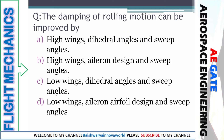Next question: the damping of a rolling motion can be improved by — high wing, dihedral angle and swept angle; high wing, aileron design, swept angle; low wing, dihedral angle and swept angle; or low wing, aileron design and swept angle. You must remember that dihedral angle plays an important role in roll damping, followed by swept angle, which also increases lift at high angles. So the right answer is option A.